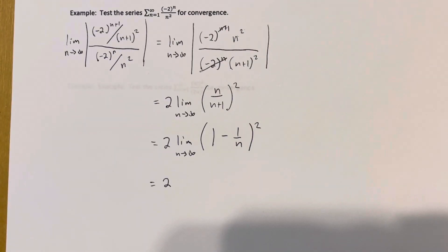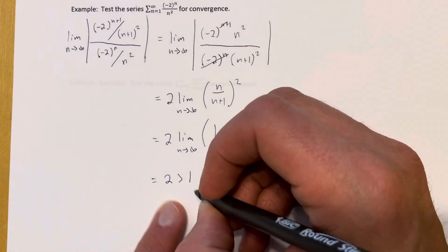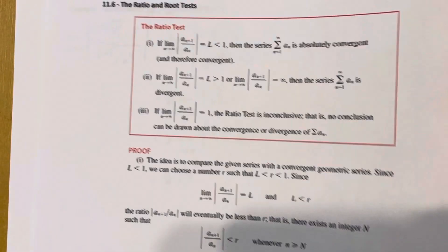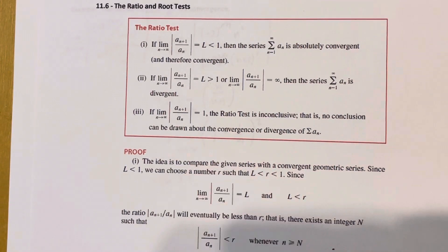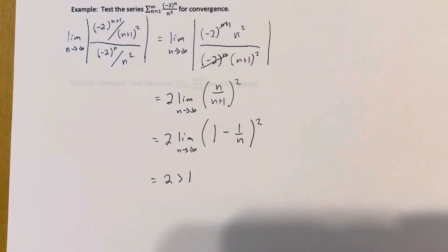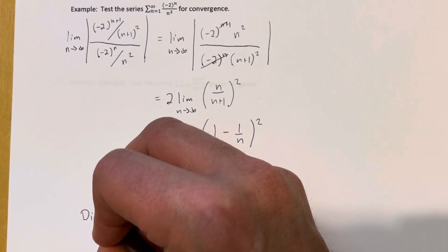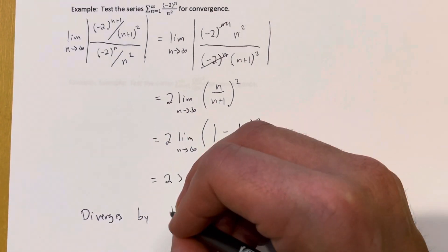Remember, in the ratio test we compare this limit to 1. Since L = 2 is greater than 1, our series is divergent by the ratio test.